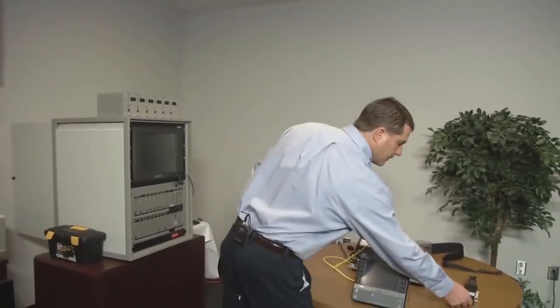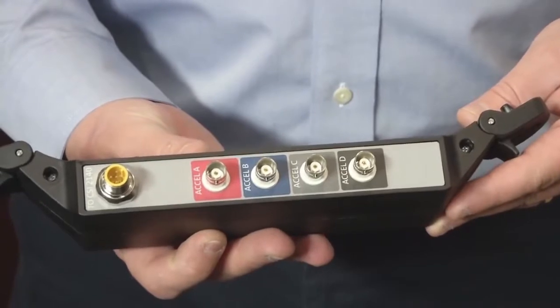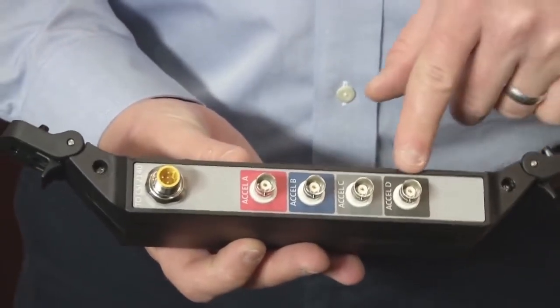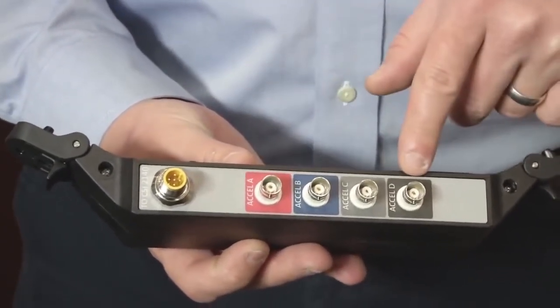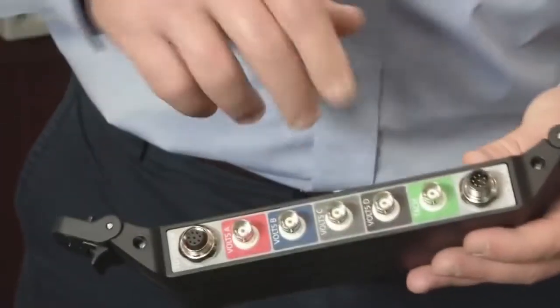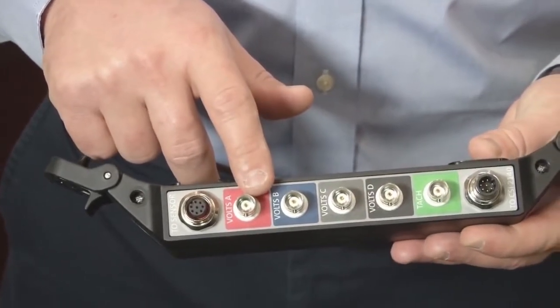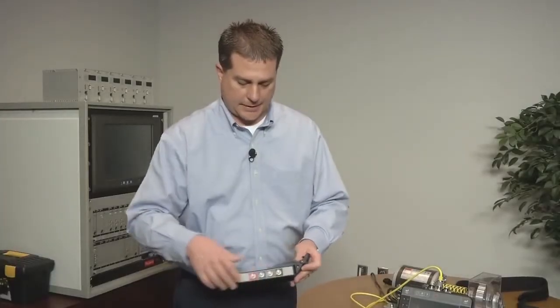So I mentioned the simultaneous four channel capability of the CSI 2140. And one accessory that aids us in getting those signals into the analyzer is this four channel input adapter. Now this easily attaches around the back of the unit and you can see that it's got two sides to it. And with BNC, standard BNC connections, easy to twist on and off BNC cables.